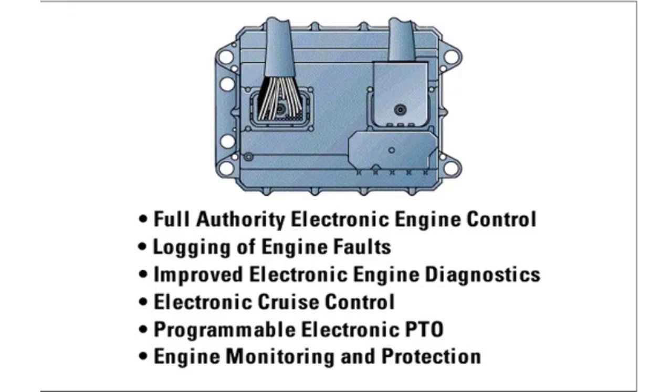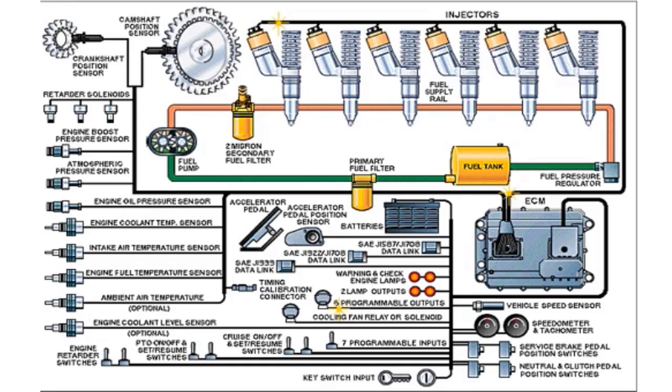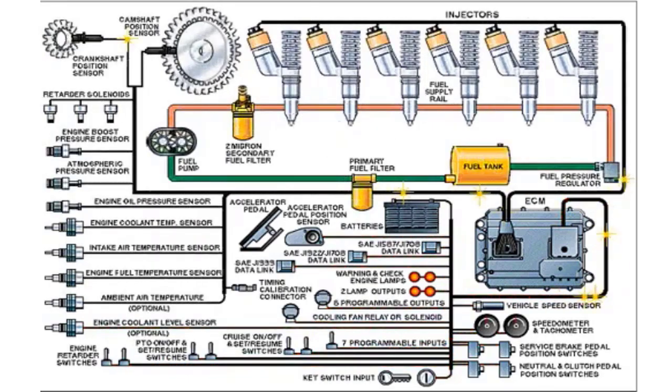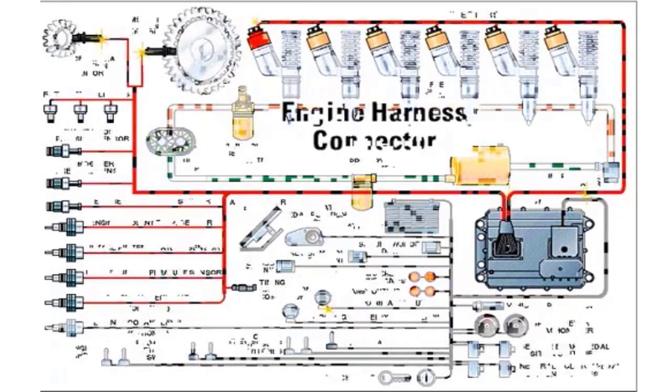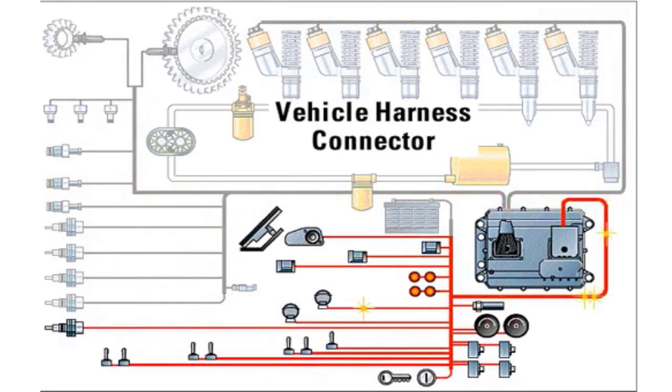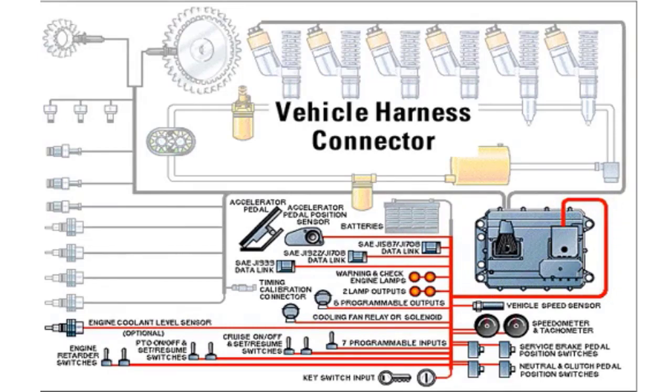The vehicle harness connects the ECM to the engine. The engine harness connects the ECM to all of the sensors and actuators including the EUI injectors. The vehicle harness connects the ECM to the engine control portion of the main vehicle harness. This includes the accelerator pedal position sensor, vehicle speed sensor, transmission brake and clutch switches, cruise control and PTO control switches, data links, check engine and warning lights, engine retarder switches, speedometer, and cooling fan solenoid.